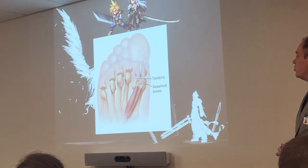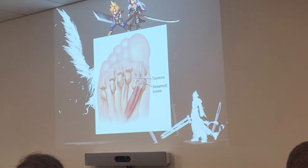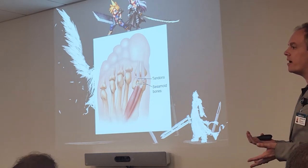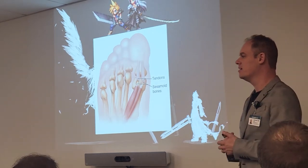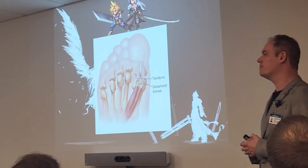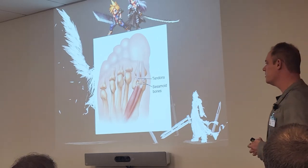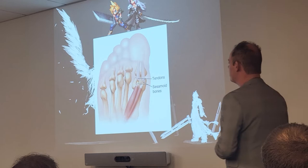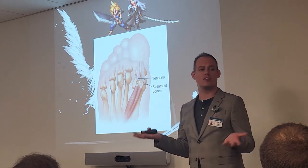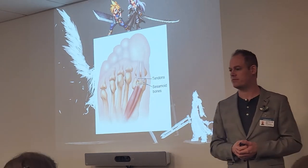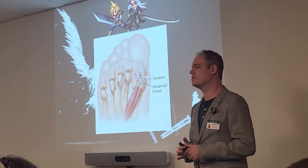Sesamoid bones show how those tendons attach. You can form new tendon attachments depending on what area of your body has increased friction. Some people have more sesamoid bones than others depending on how much they work those joints. More athletic people will have more sesamoid bones in certain parts of the body, which you'll see on x-rays.